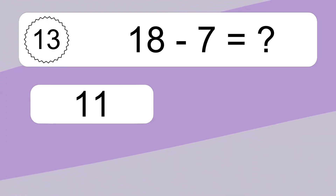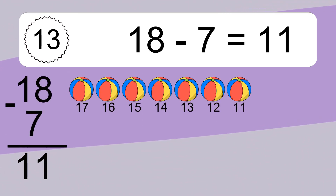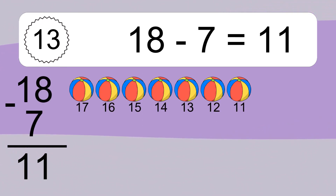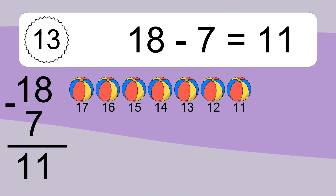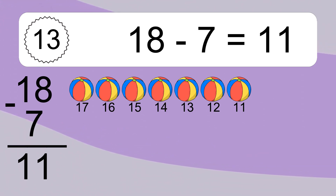18 minus 7 equals what? 18 minus 7 equals 11. Let's count it. 18, 17, 16, 15, 14, 13, 12, 11.